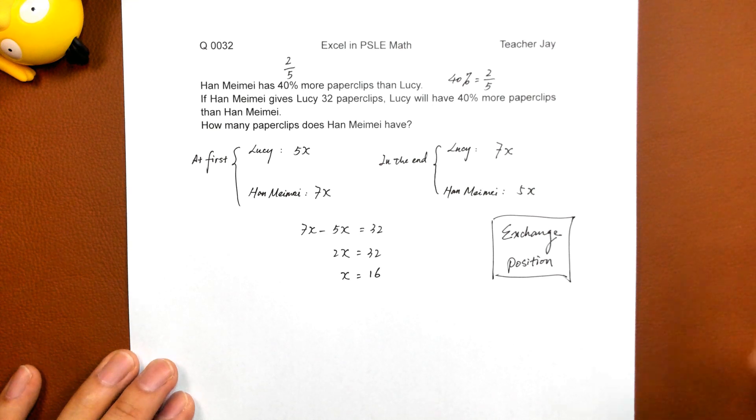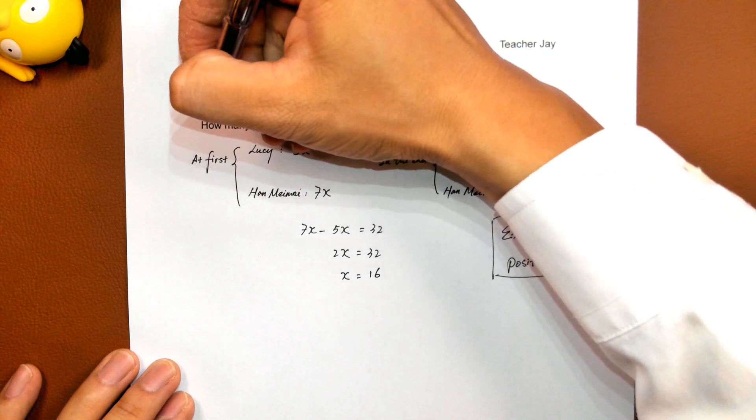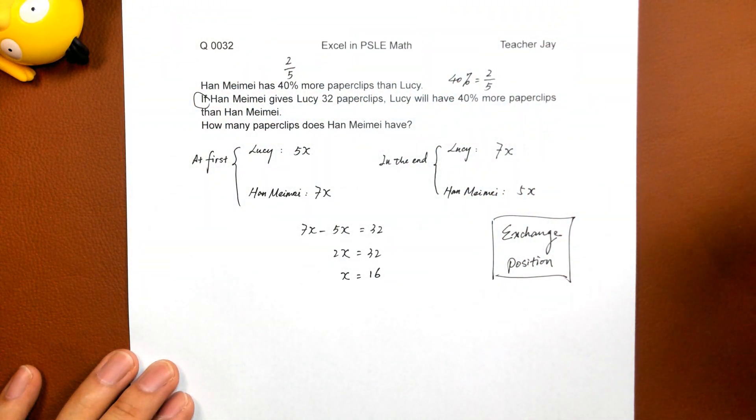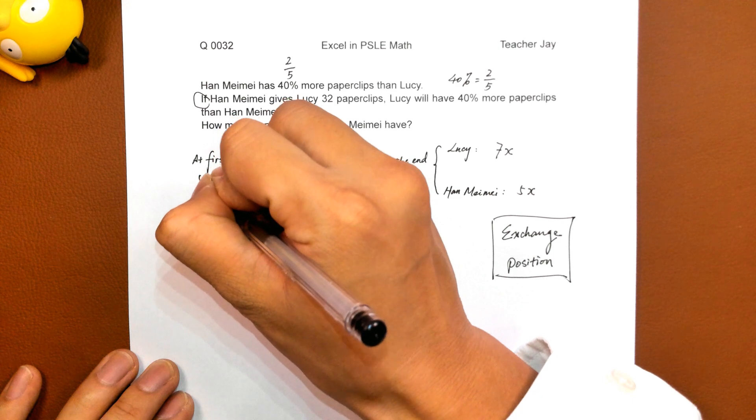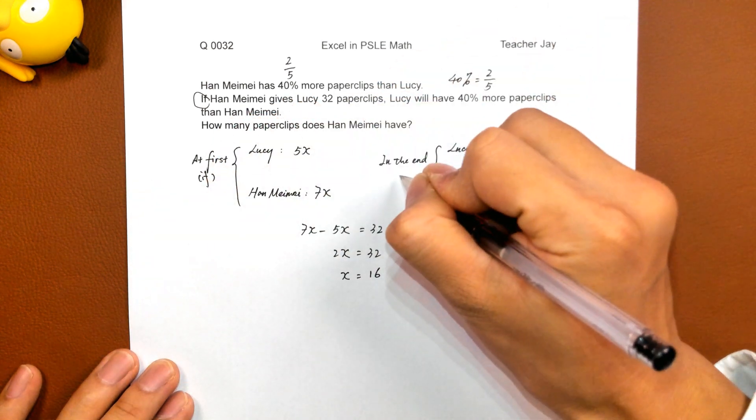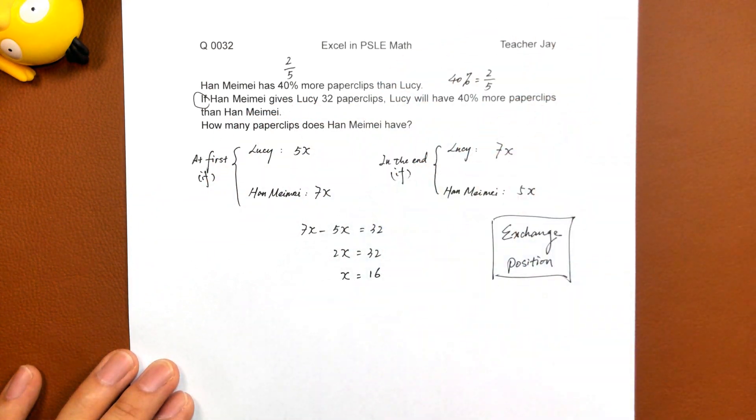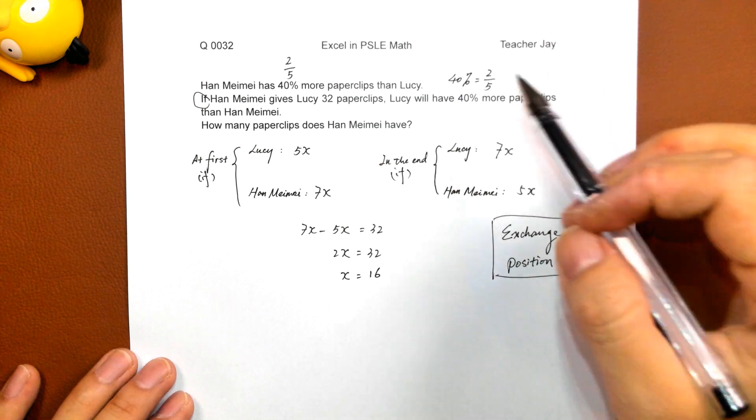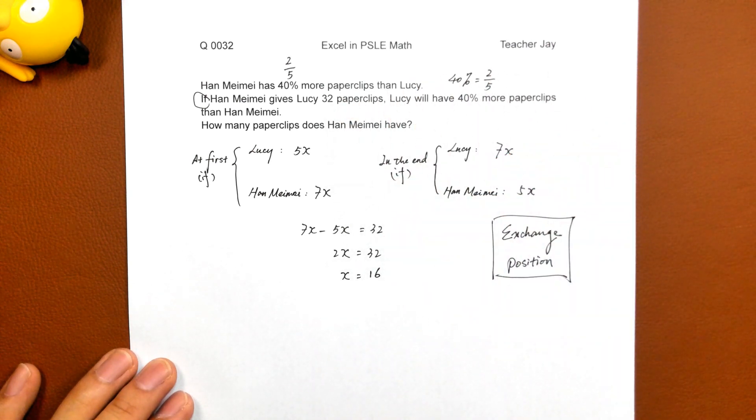Okay. So, the question is how many paper clips does Han Mei Mei have? Because it's if. So, this one is if. It didn't happen. You just imagine that Han Mei Mei gave Lucy 32. But it doesn't happen.